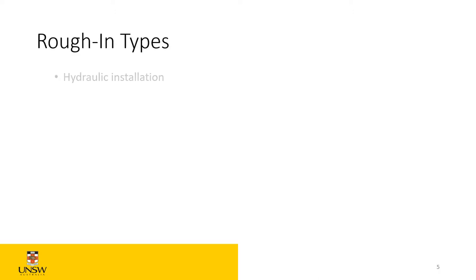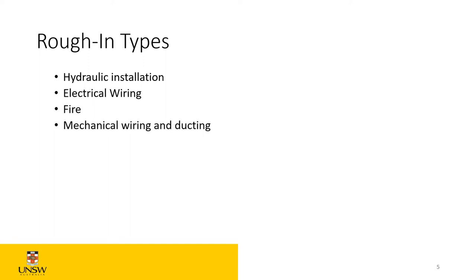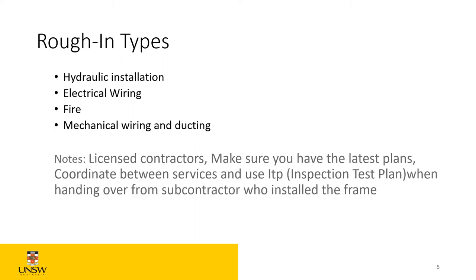The roughing-in types include hydraulic installation, electrical wiring, fire — both wet and dry, from sprinklers to EWS to speakers to smoke detectors — and mechanical wiring and ducting, because you still need to run refrigerant pipes and ducting. Always use licensed contractors, make sure you have the latest plans, coordinate all services, and use an ITP — Inspection Test Plan — when handing over from one subcontractor to another. Once the electrician finishes they give you an ITP; the plumber does the same, mechanical the same, fire the same.